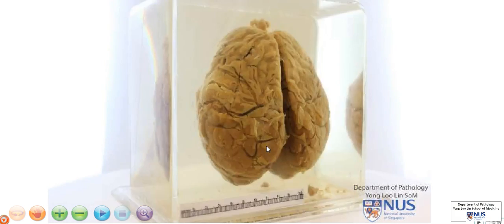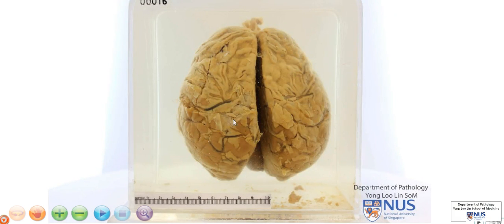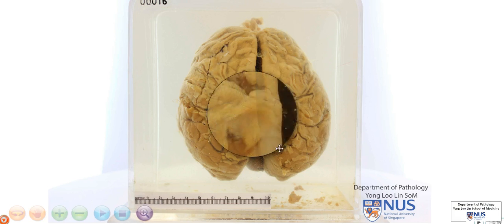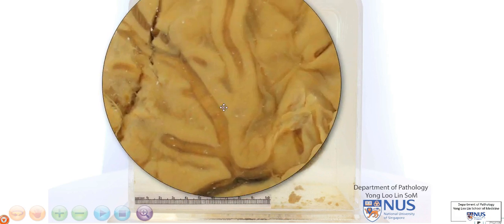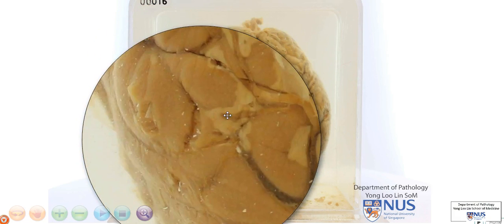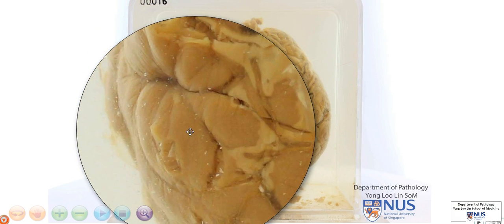The pathology is actually most obviously visible looking at the cerebral hemispheres. We can see that this whole area looks a little bit milky compared to here. So I'm going to zoom in. This is what the normal coverings of the brain should look like.